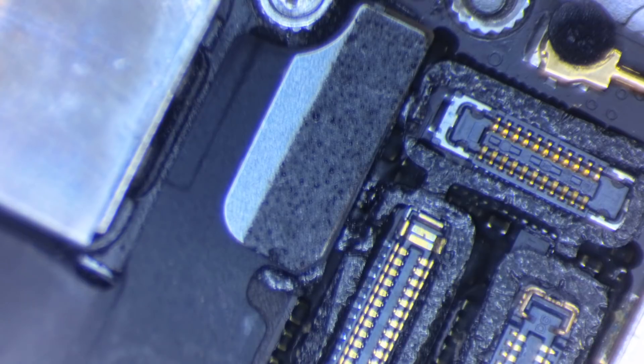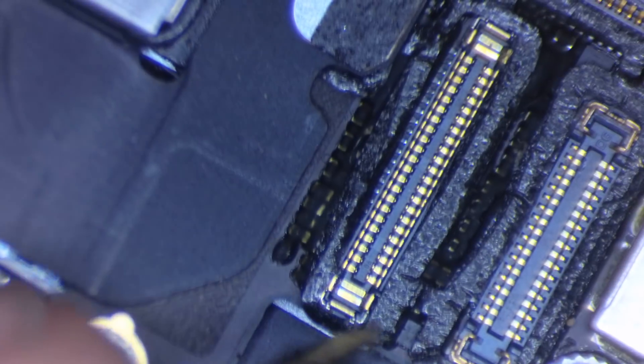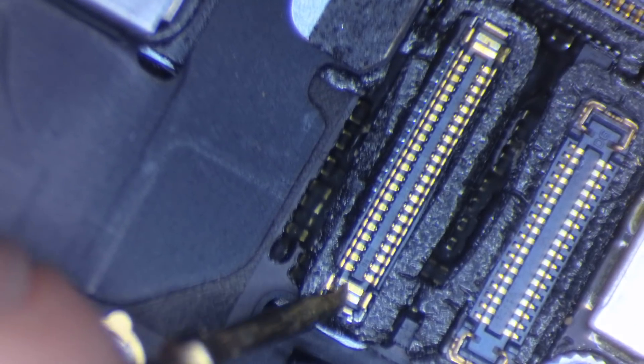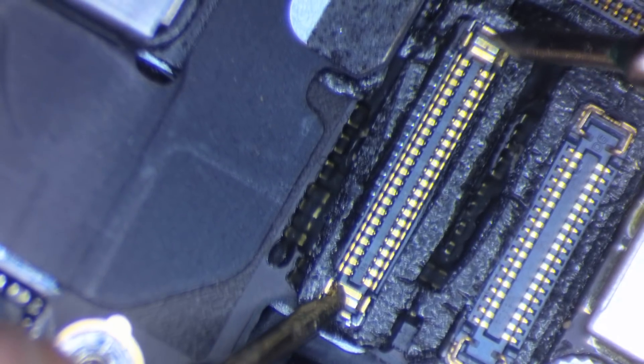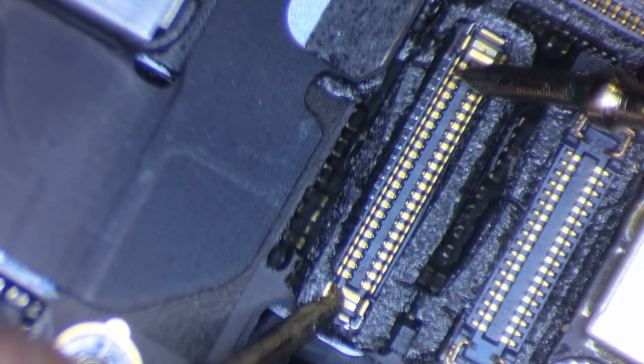First thing I always do is diode mode, the anode pin with the battery disconnected. Black on ground, red on the middle pin right here, and that says OL.